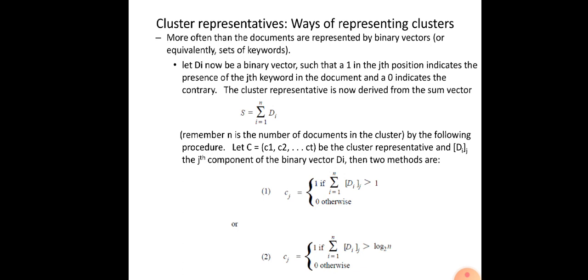The jth component corresponds to an index term or keyword — if that keyword is present in more than one document (because the vectors are binary), we sum it up and if it is greater than 1, the keyword is present in more than one document. We then set the corresponding component in the cluster representative as 1. So cj = 1 means that particular keyword is present in more than one document. The threshold here is 1.